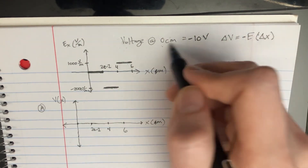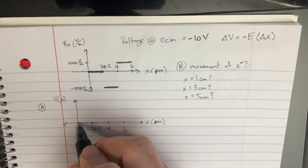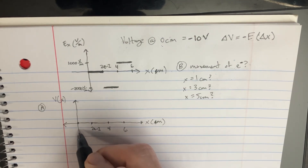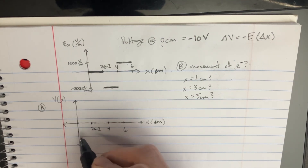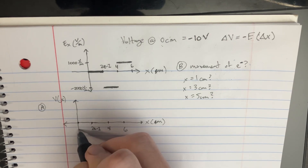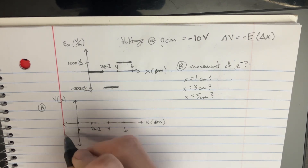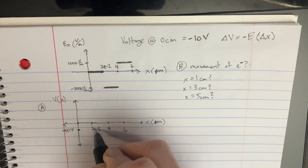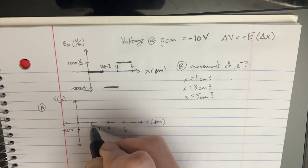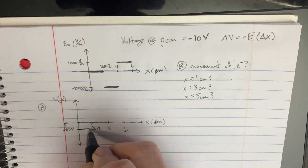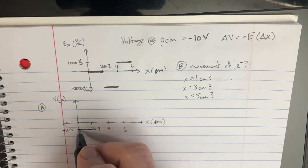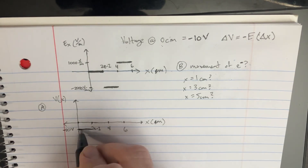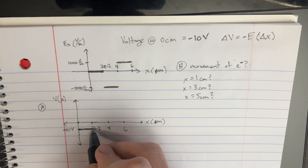What's the given voltage at 0 centimeters? It's going to be negative 10. That's what we're going to start our graph off at — negative 10 volts. And we're going to move 2 centimeters through a change of nothing, so we're just going to go 2 centimeters through that field.